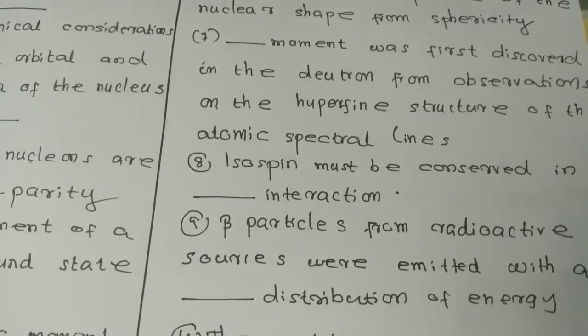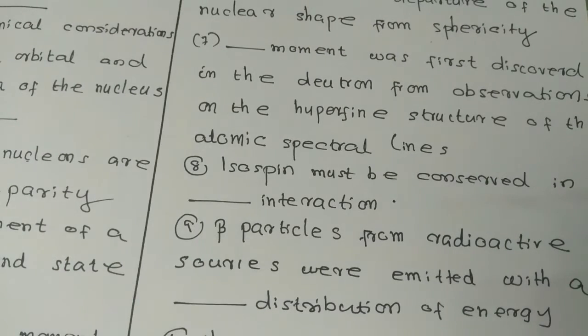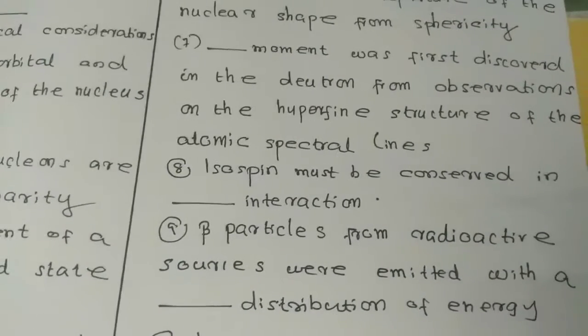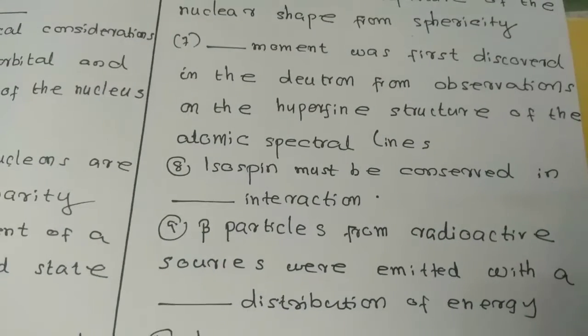Question number eight: isospin must be considered in dash interaction. Question number nine: beta particles from radioactive sources were emitted with a dash distribution of energy.